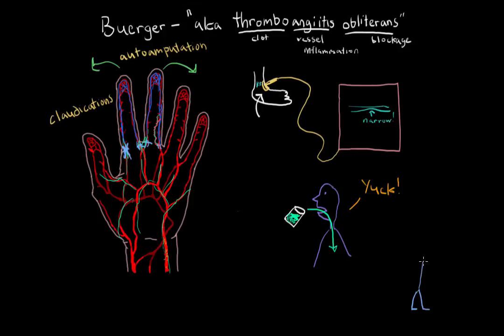A risk factor of this disease is smoking. The pathophysiology isn't quite understood, but it's believed that something in the tobacco or something in the cigarette is causing the immune system to respond. And for some reason, vessels in your hands and your feet are affected.